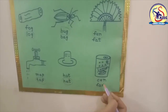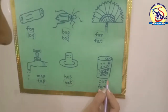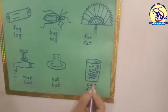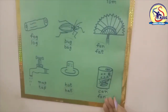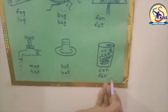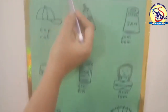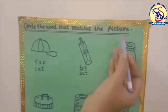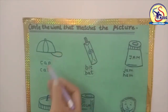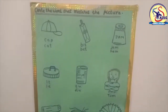Here is our next picture and this is the picture of a can — C-A-N, can, or F-A-N, fan. Which is the correct word? Yes, can, C-A-N, can. So students, today we have done the exercise 'Circle the word that matches the picture.' You have to do this exercise at home. Okay, bye bye, take care.